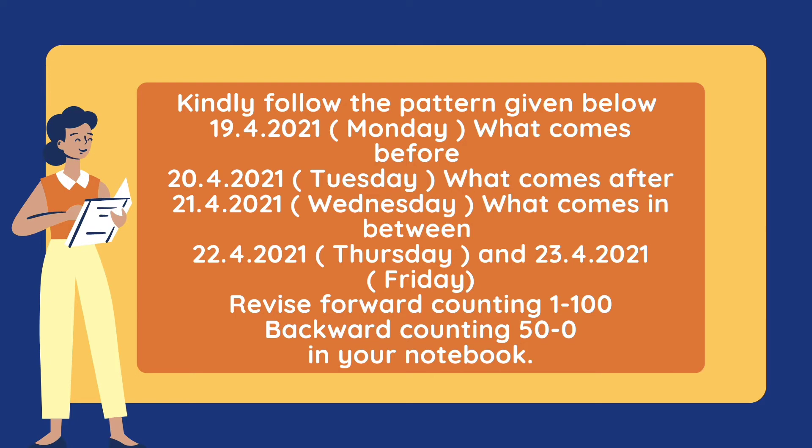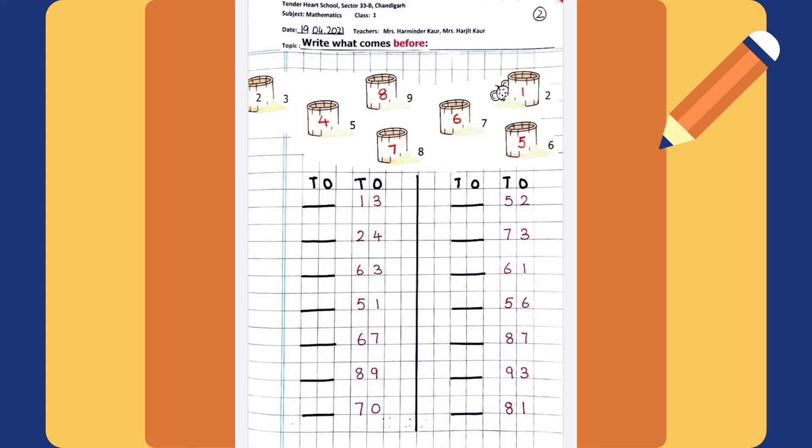22nd April 2021 Thursday and 23rd April 2021 Friday - Revise forward counting 1 to 100 and backward counting 100 to 1 in your rough notebook. Notebook work - Write what comes before. Few examples are given.